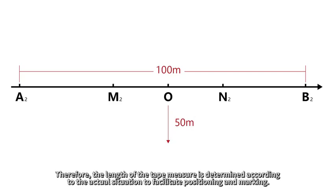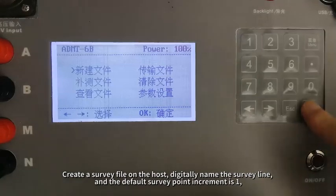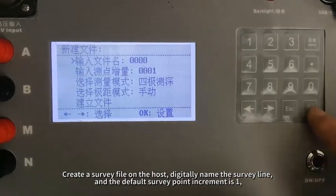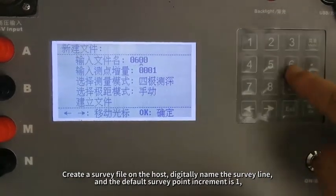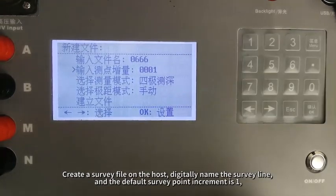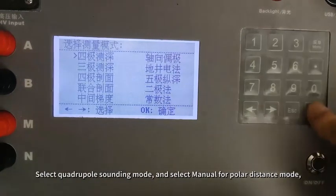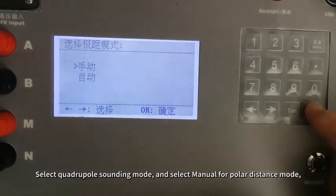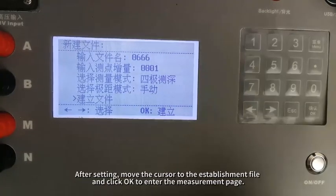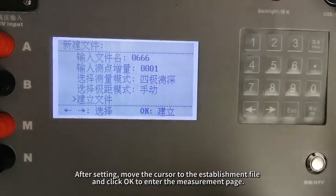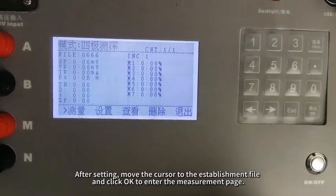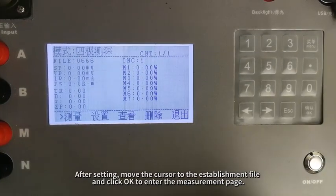Therefore, the length of the tape measure is determined according to the actual situation to facilitate positioning and marking. Create a survey file on the host, digitally name the survey line, and the default survey point increment is 1. Select quadruple sounding mode, and select manual for polar distance mode.